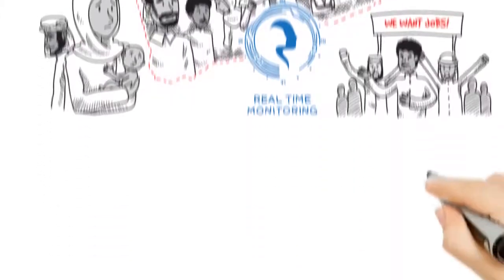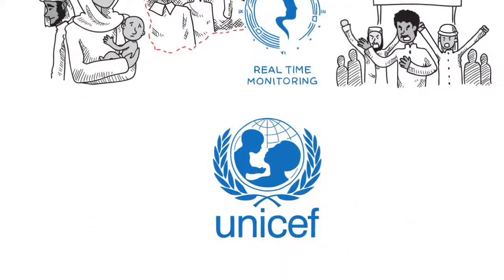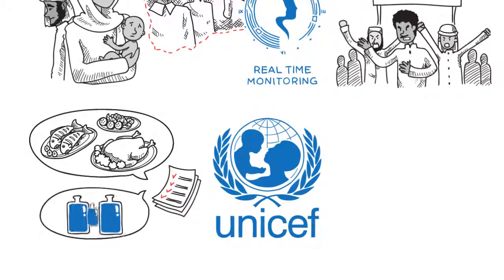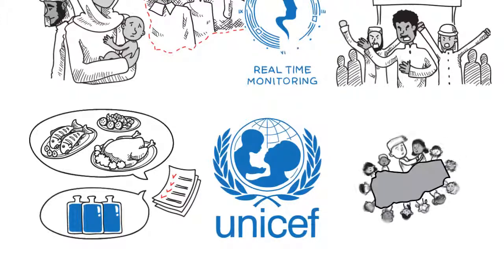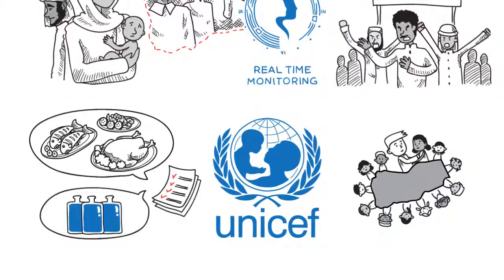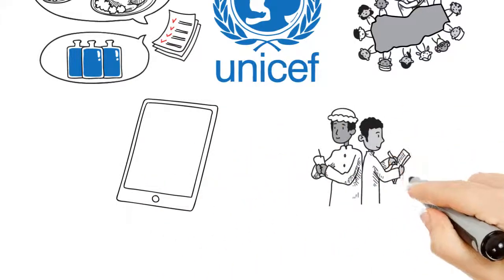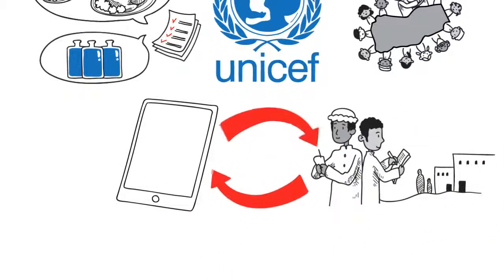In response, UNICEF Yemen launched a bi-weekly survey to track vulnerability factors like nutrition and water intake among a small sample of poor families in different regions of the country. iPads were introduced so that data collectors could transfer information in less than a day. This ongoing monitoring proved vital to informing the design of life-saving interventions.